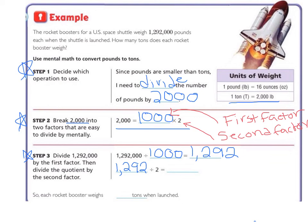So when we do the math, we get 646. So each rocket booster weighs 646 tons when launched.